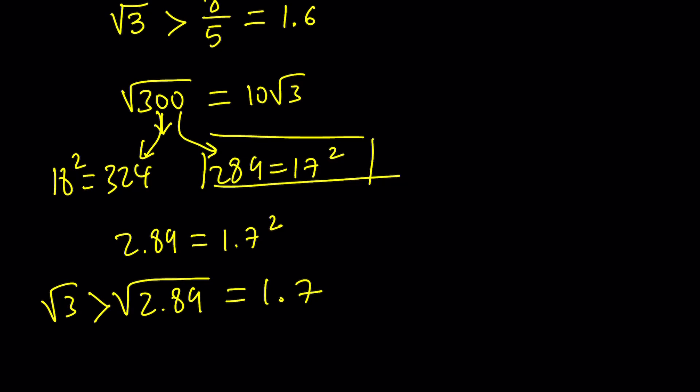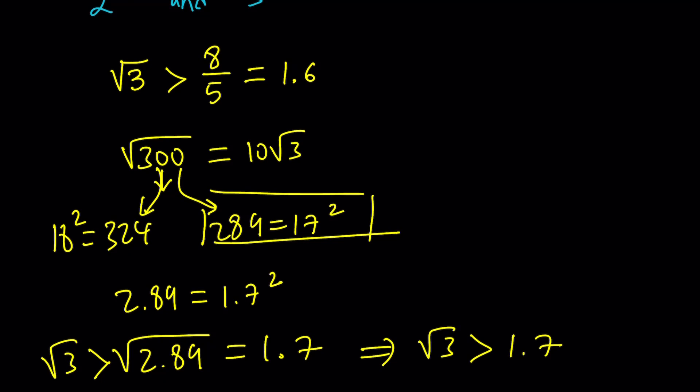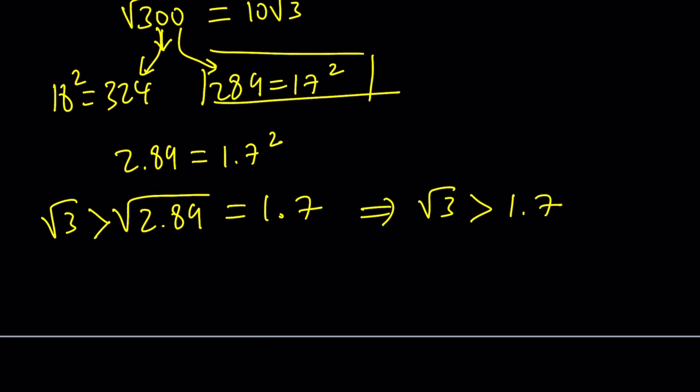And obviously, this implies that the square root of 3 is greater than 1.7. Okay, great. We just were trying to prove that square root of 3 is greater than 1.6. We got a better bound. And obviously, 1.7 is greater than 1.6.